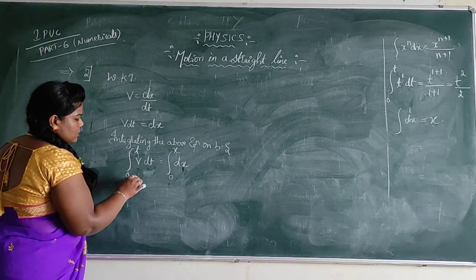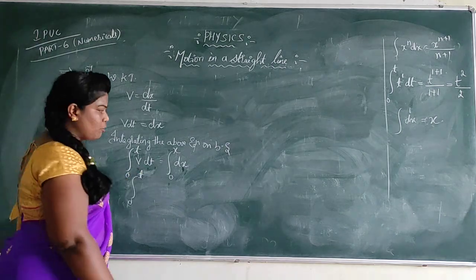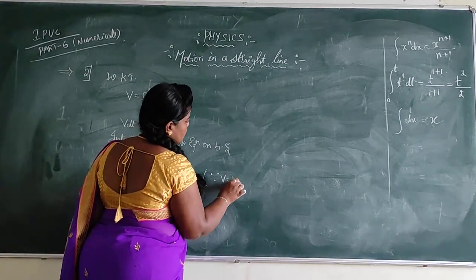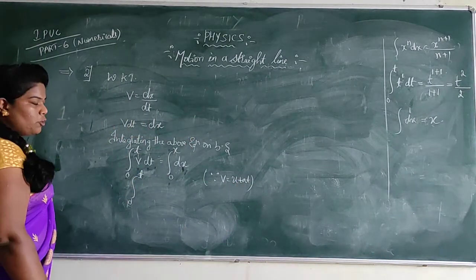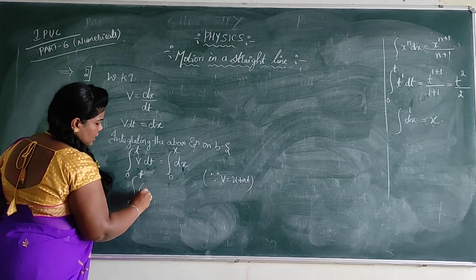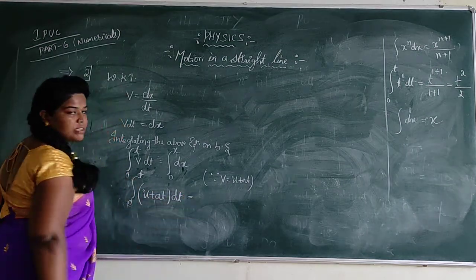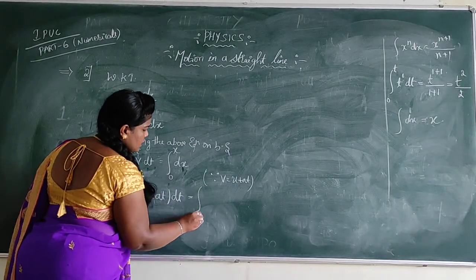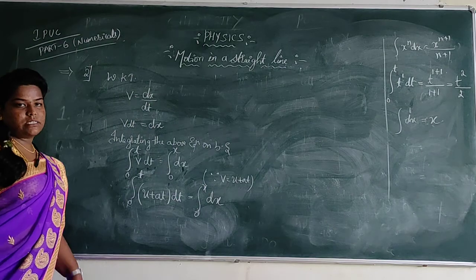Dear students, in case of V, you know that there is a first equation of motion. V can be written as U plus AT. So I am substituting U plus AT in case of V here, so that U plus AT into DT, which is equal to the integral from 0 to X into DX.